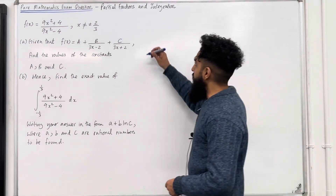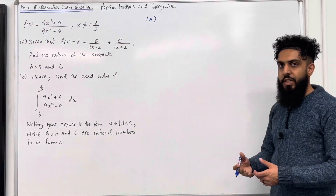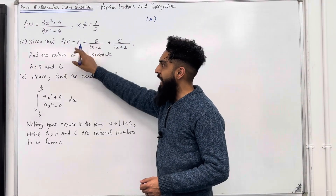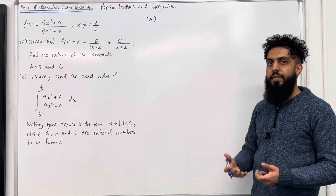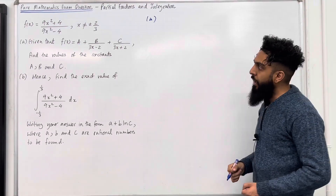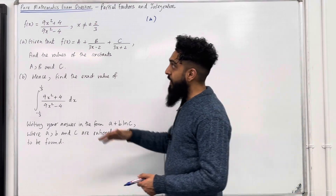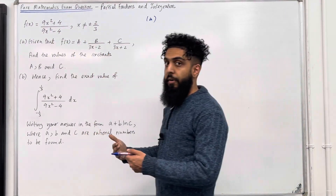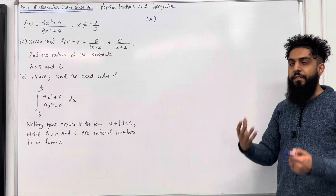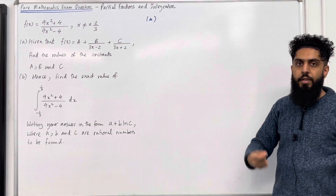Let's have a look at the solution to part A. My first observation is that I've got a constant A, which is called the quotient. In order to find the quotient, we need to apply polynomial division. We also need to apply polynomial division because this fraction is an improper fraction. Whenever you have an improper fraction, before you split into partial fractions, you must apply polynomial division.